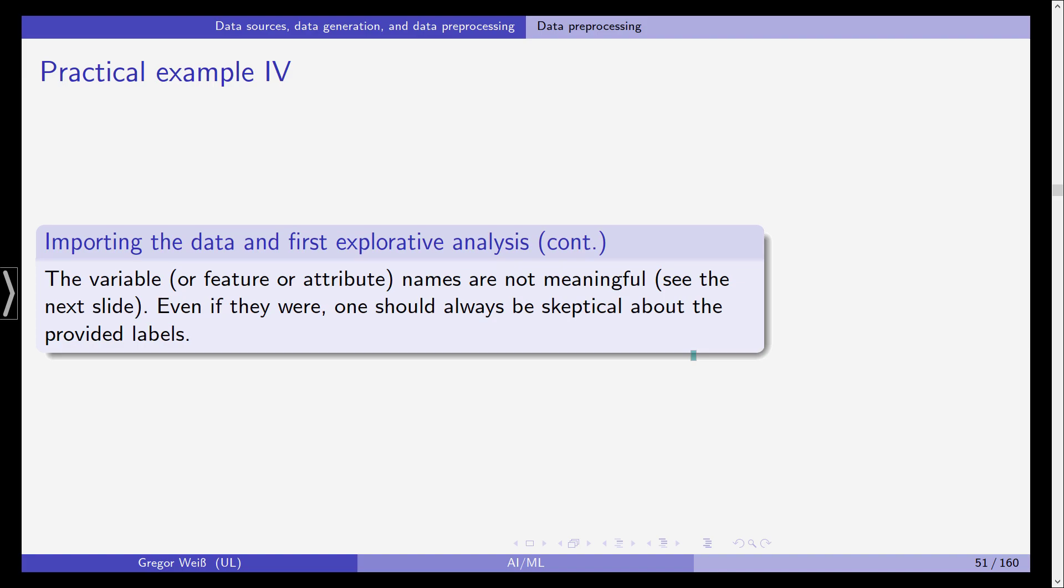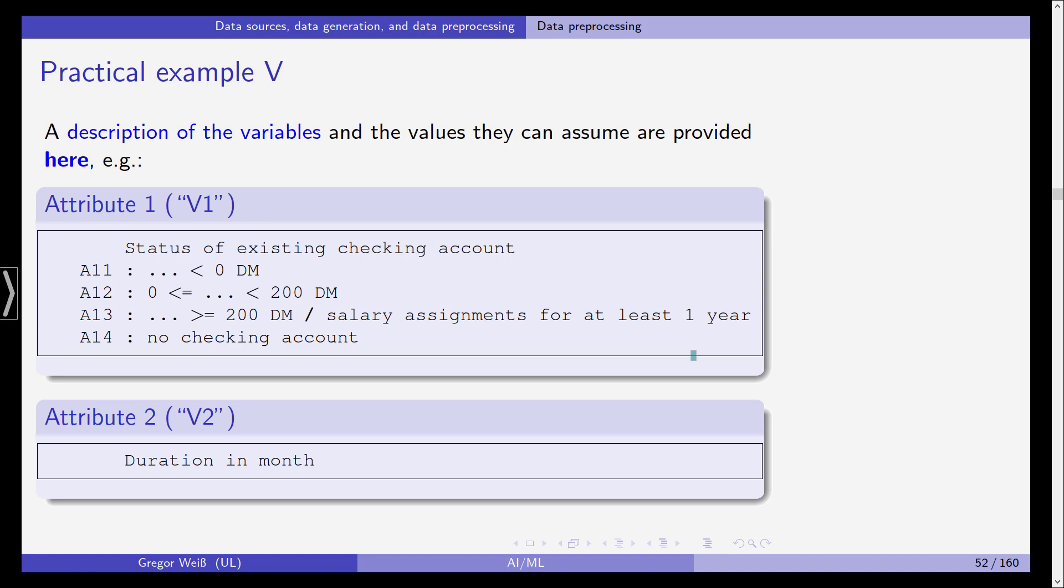The variable or feature names are not meaningful in an economic way. It's a German credit data sample, so we would expect the names to be something like income, marital status, gender, location, assets. But V1, V2, V3, we cannot infer what is meant with these variables. In the next step, we need to rename them to understand what is meant by variable 1, variable 2, and so on. You should always be skeptical about the provided labels and check the data before starting your analysis.